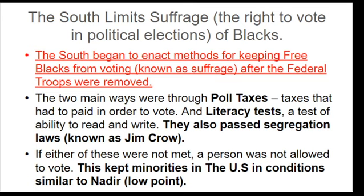You might ask — wouldn't there be poor, illiterate white people who also couldn't vote? They developed the Grandfather Clause. It allowed people to vote if their parents or grandparents could vote. Since black grandparents and parents could not vote, their kids couldn't vote either. It was a way to keep control.